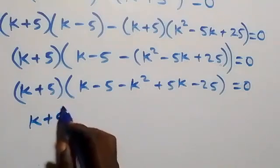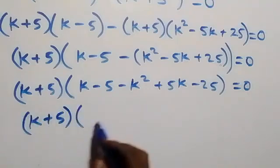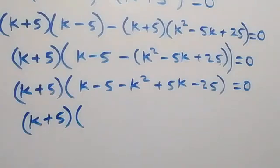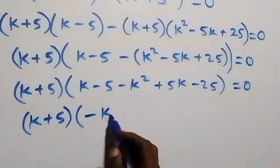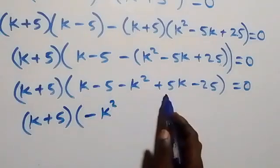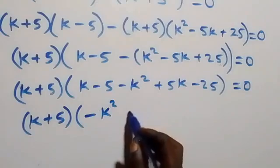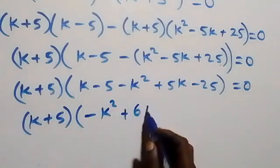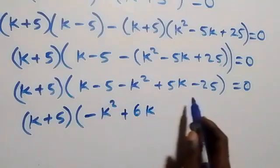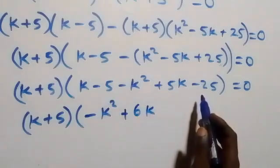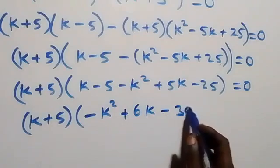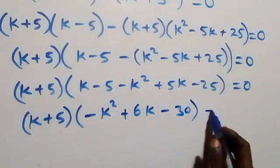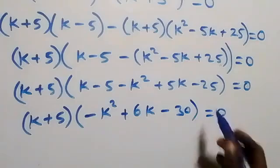Solving further, we still have k plus 5, then into a bracket we rearrange: writing k squared as minus k squared, then k plus 5k equals plus 6k, then minus 5 minus 25 equals minus 30. So this becomes k plus 5, times bracket minus k squared plus 6k minus 30, equals zero.